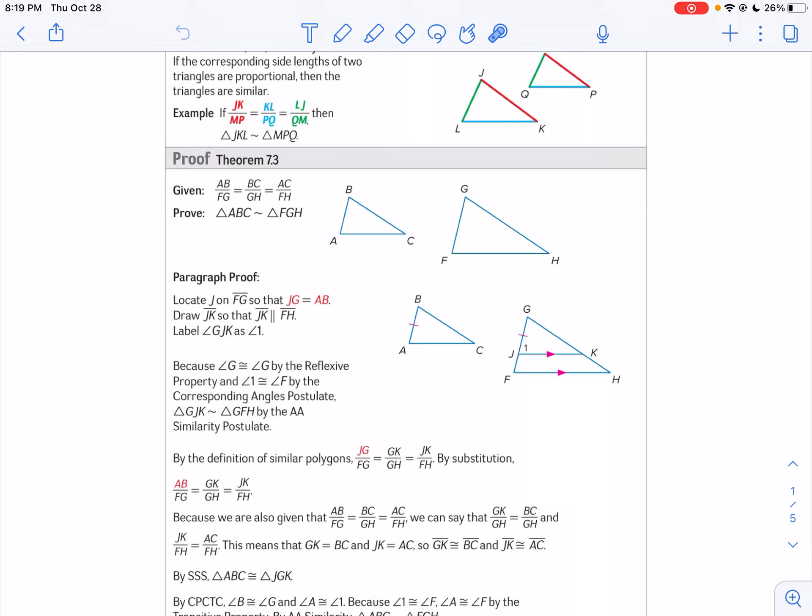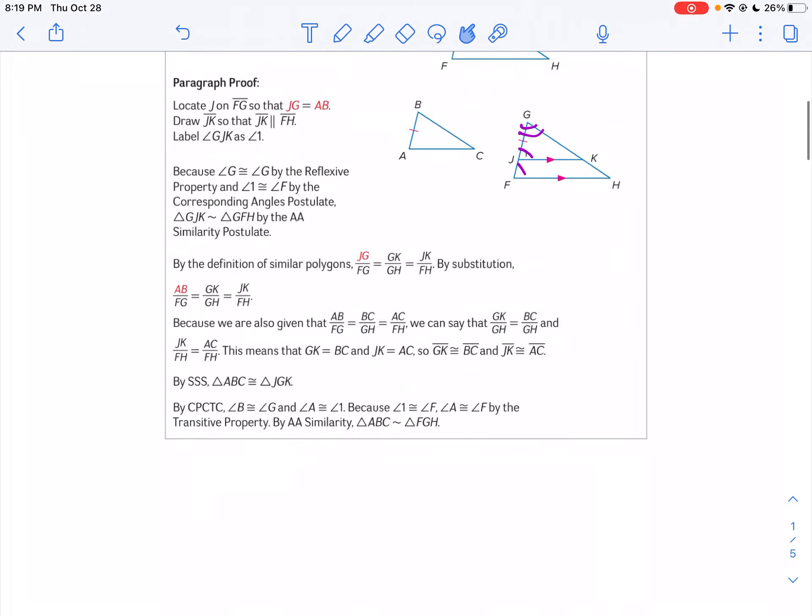Well, if you have parallel lines, I know angle 1 and angle F would be congruent because they're corresponding angles. And then you could have angle G by reflexive property. They would be congruent. So you've got angle-angle similarity.